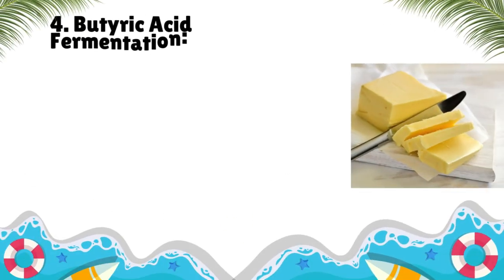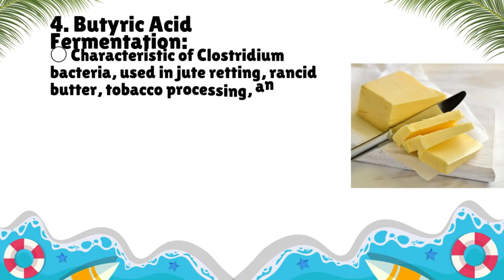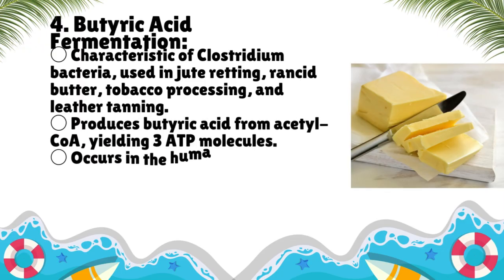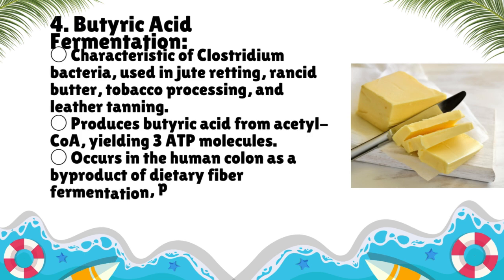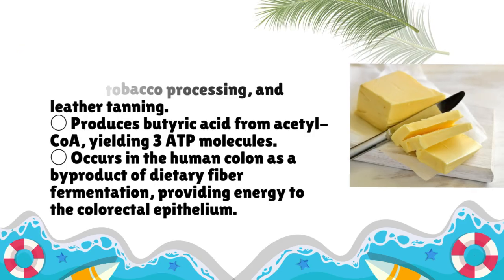Butyric acid fermentation is characteristic of Clostridium bacteria and is used in jute retting, rancid butter, tobacco processing, and leather tanning. It produces butyric acid from acetyl-CoA, yielding three ADP molecules. It also occurs in the human colon as a byproduct of dietary fiber fermentation, providing energy to the colorectal epithelium.